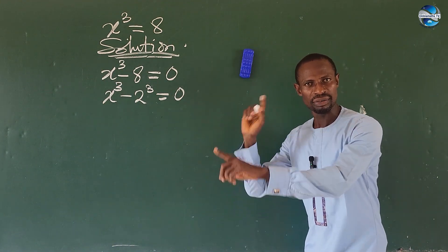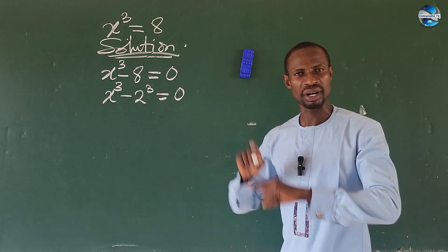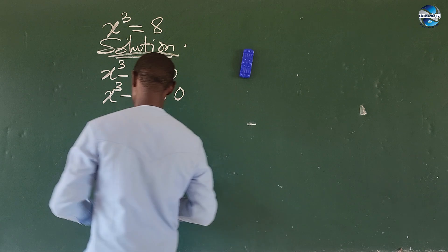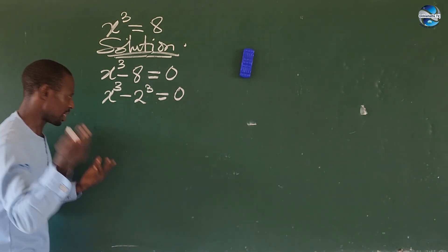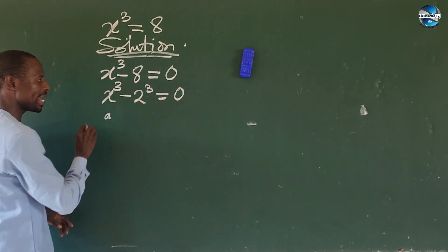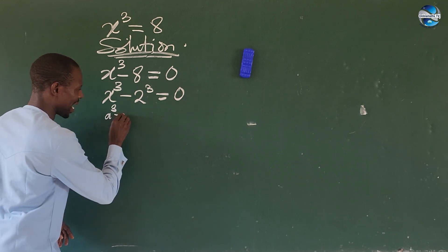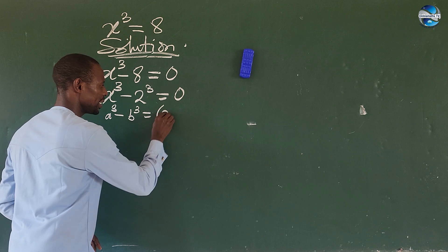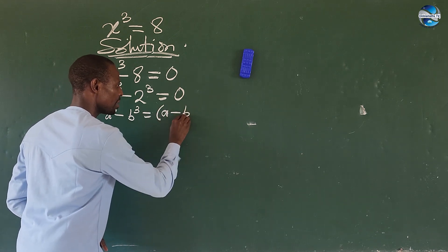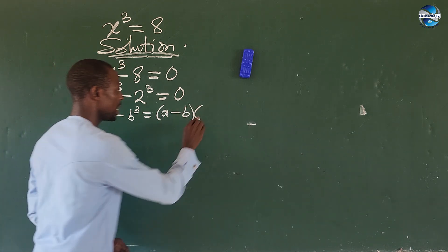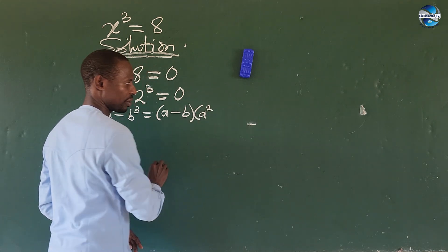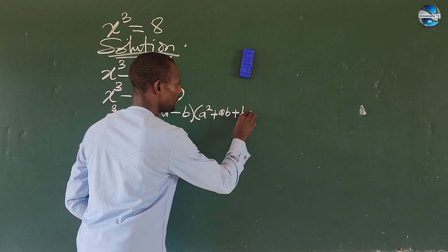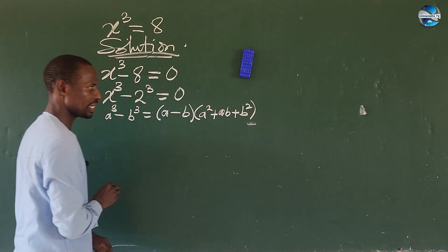We have x³ - 2³. We apply what is called difference of two cubes. Remember that? Let me bring it to your remembrance. It says that if you have a³ - b³, this is equal to (a - b) times another bracket, then we have a² plus ab plus b². Remember something like this?